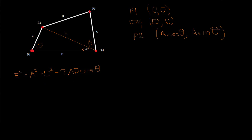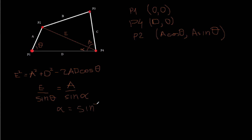Once we find E, we can find alpha by the law of sines. So E over sine of theta is going to be equal to A over sine of alpha. So alpha is going to be the inverse sine of sine of theta times A over E.